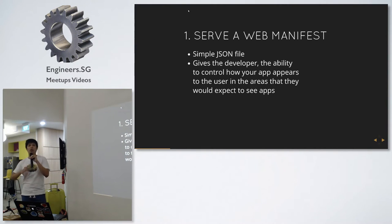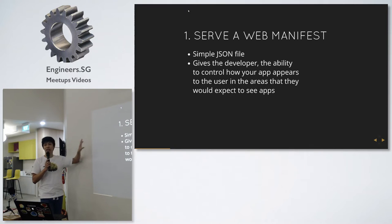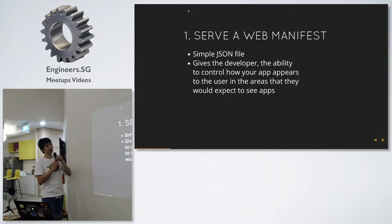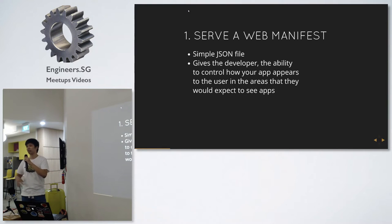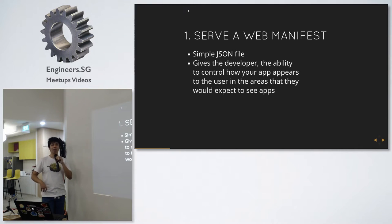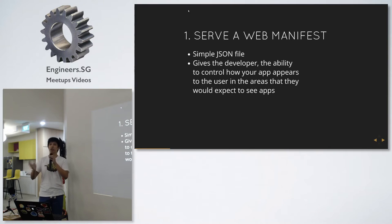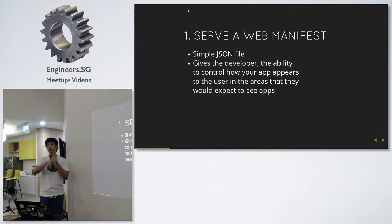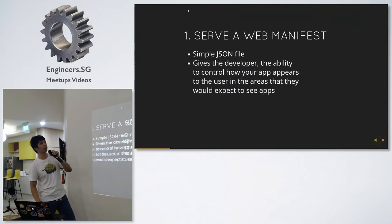One of the first things you need for push notifications, at least for Google Cloud Messaging, is that you need to serve a web manifest. A web manifest is basically just a JSON file that contains a bunch of settings the browser will read. It gives you the ability to shape your app — for example, on Chrome you can add a web page to your home screen, and the icon and title are defined through this web manifest.